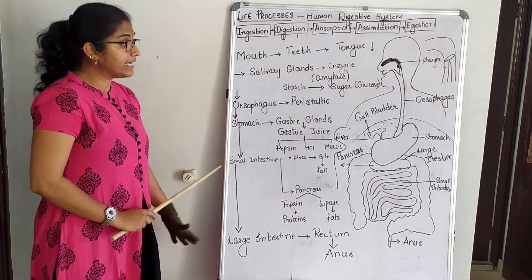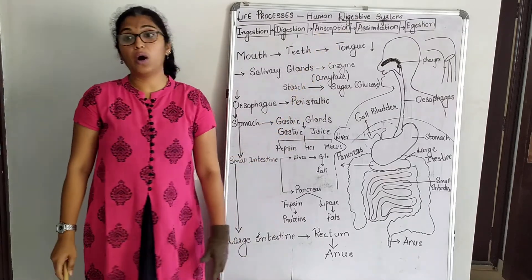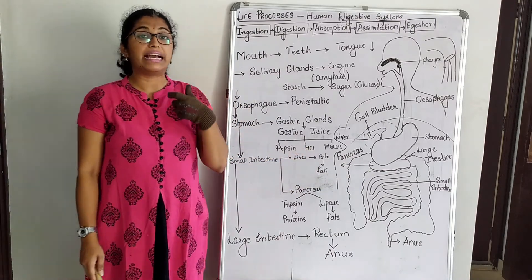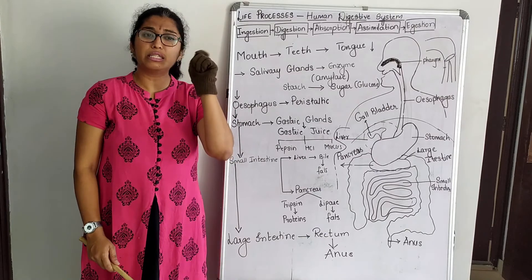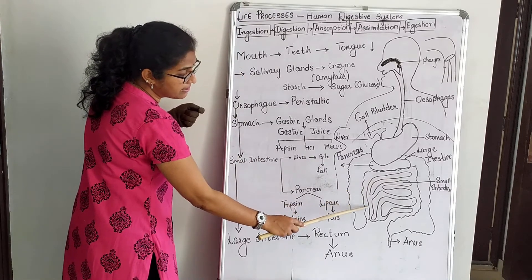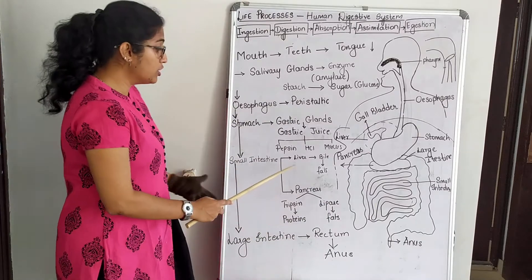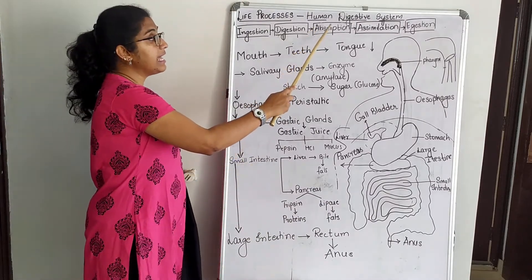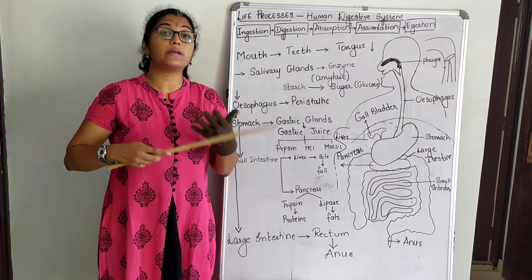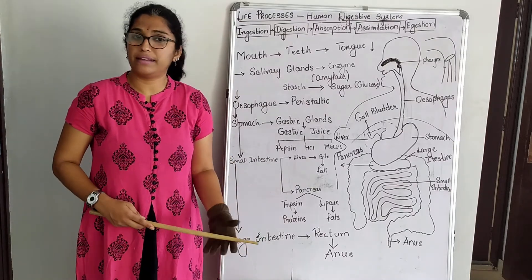The digested food is then absorbed by the body. The inner layer of the small intestine has villi-like structures — small hair-like projections that are very close to blood vessels. The digested food gets absorbed by these blood vessels, which then carry out various functions in the body required for growth, repair, and other processes.